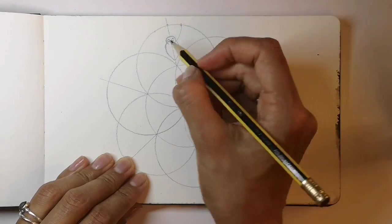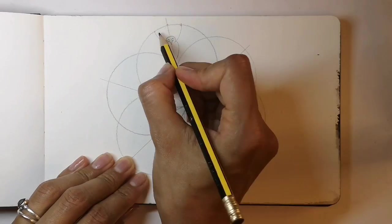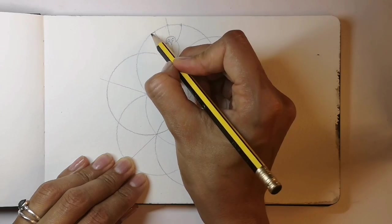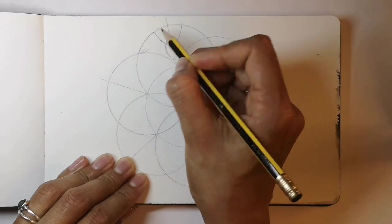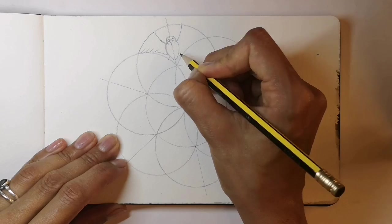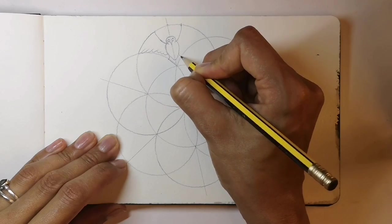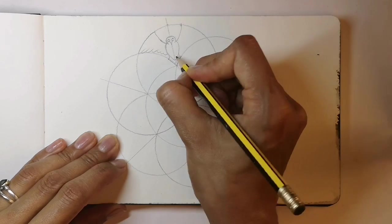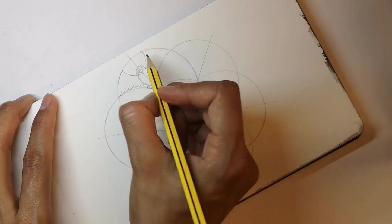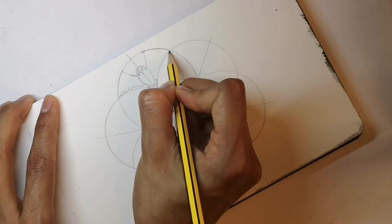Now curve up and curve up again for the other side of the wing. Now we can complete the feathers and the pointy arrow like tail. The feathers on the other side.